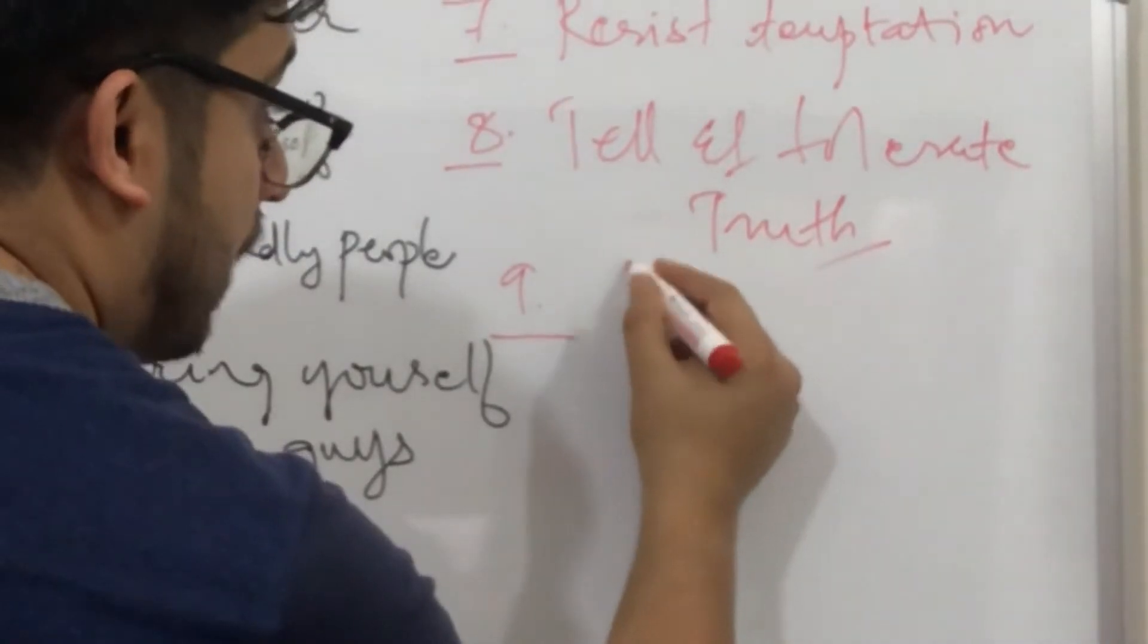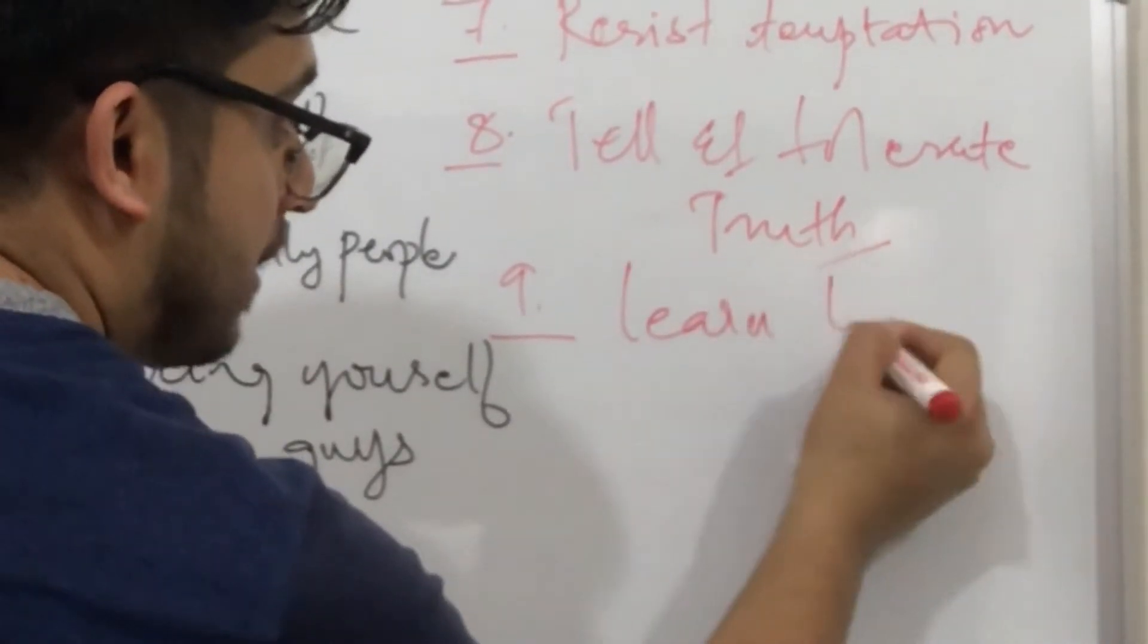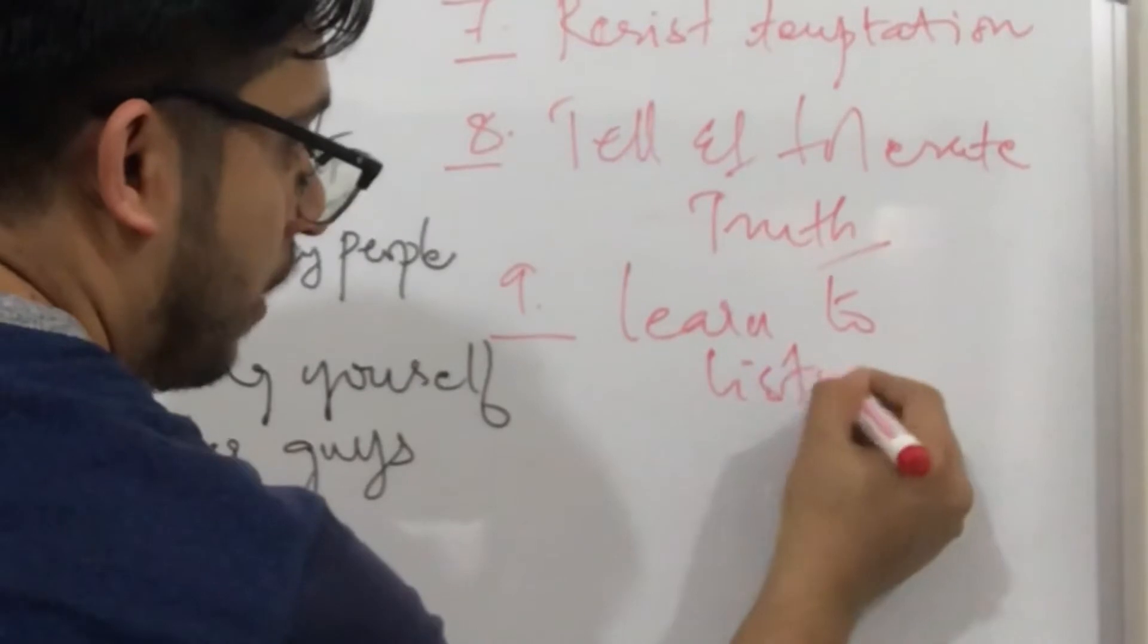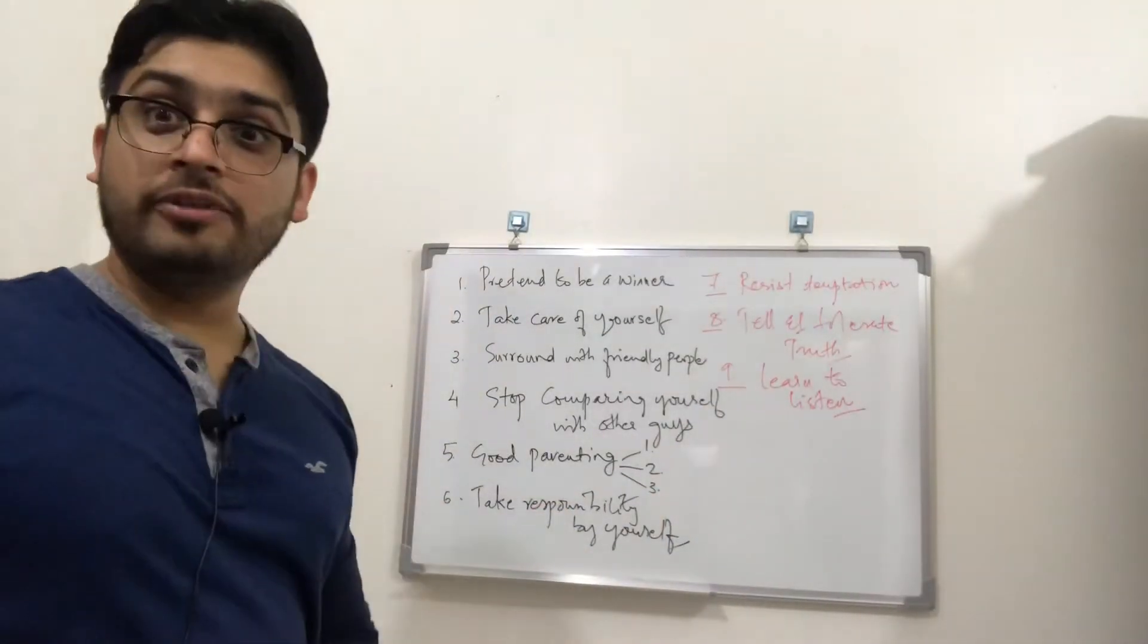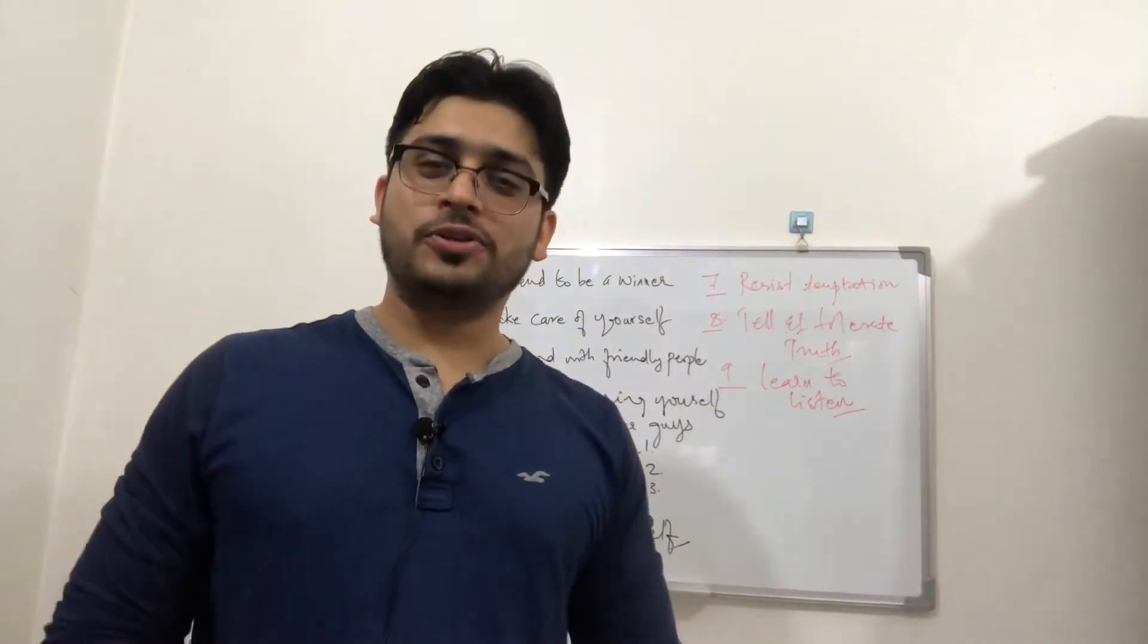Listening is an art you should practice. So the ninth rule for a meaningful and happy life is to learn to listen. Learn to listen. Only if you are able to listen, you are going to learn. And only if you are learning, you are going to grow in your life.